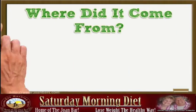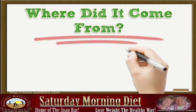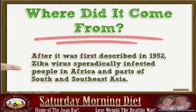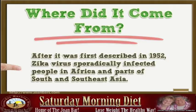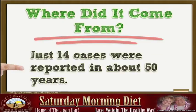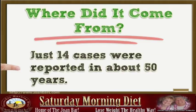Where did it come from? After it was first described in 1952, Zika virus sporadically infected people in Africa and parts of South and Southeast Asia. Just 14 cases were reported in about 50 years.